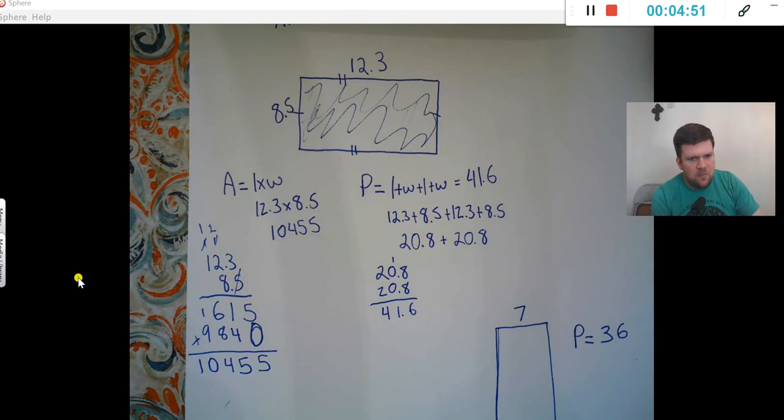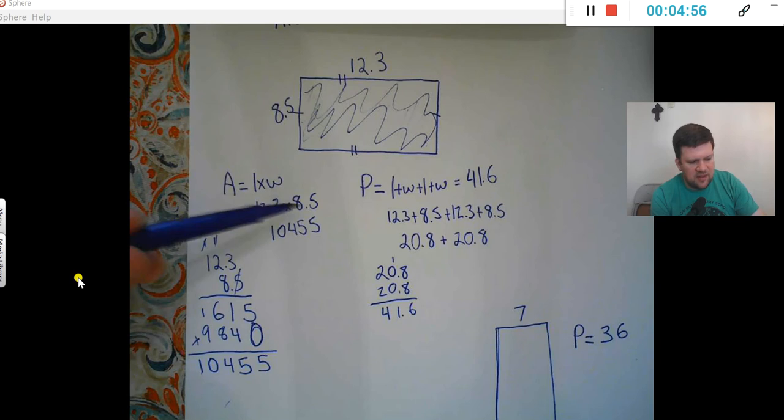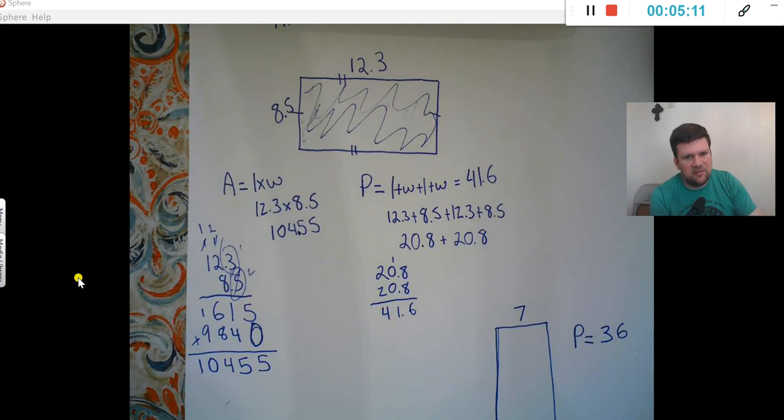Now, when I put the decimals back in, the ways that I figured this out is either estimating, if I did 12 times 8 or 12 times 9, about what is that? Normally, we've just counted how many numbers are behind the decimal. So there's 1, 2, 2 numbers behind the decimal, so my answer would have 2 numbers behind the decimal.